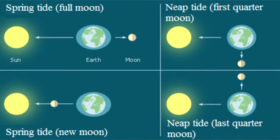Sometimes the moon's gravitational pull can be stronger than other times. For example, when there's a full or a new moon there's a stronger gravitational pull. When this happens the tidal range is going to be a lot larger, so high tide will be higher than a normal day and low tide will be lower than normal. This is called a spring tide. Spring tides usually occur about twice a month.